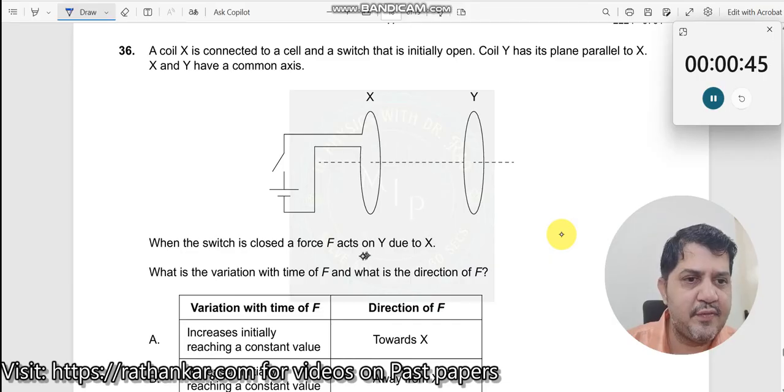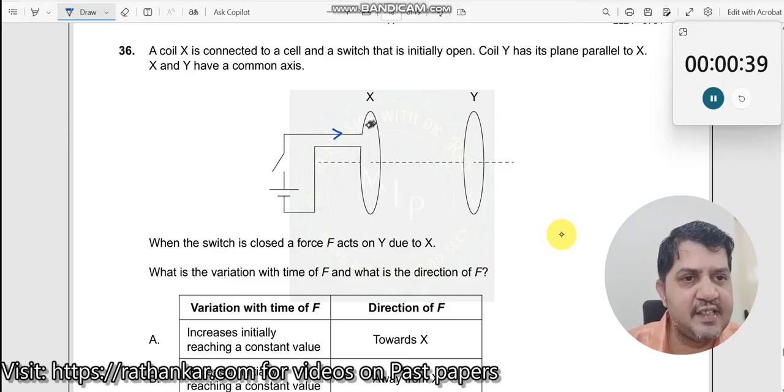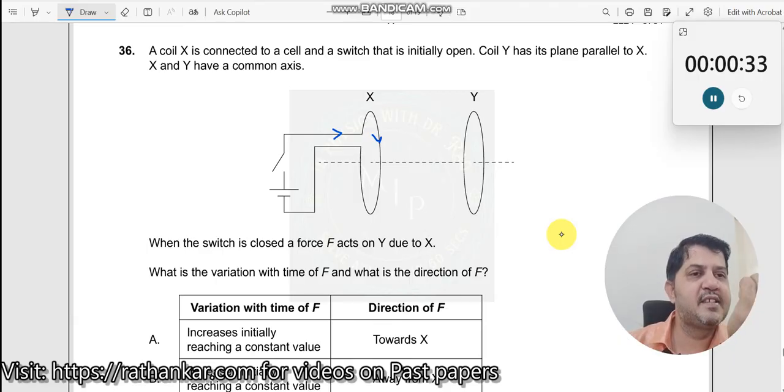When the switch is closed, a force F acts on Y due to X. So why does it act? Because there is a current which passes like this. It is a coil over here. The current passes like this. So what has happened, what is happening over here? The current passes like this.